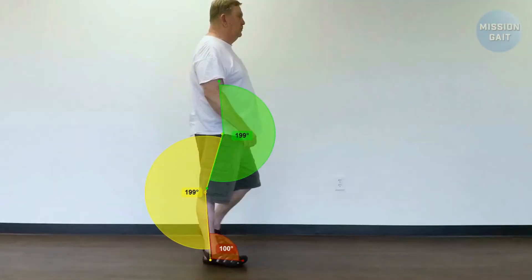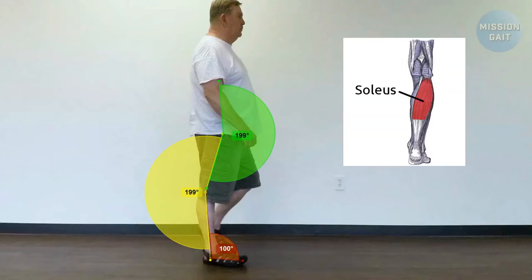At mid stance, we may also observe knee hyperextension and limited hip extension and ankle dorsiflexion, with failure to progress body mass forward over the foot. This is all caused by contracture of soleus.